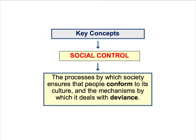It's really important to watch these videos as actively as possible, and that means making lots of notes. The first thing you must jot down is a definition of social control. Social control describes the processes by which society ensures that people conform to its culture and the mechanisms by which it deals with deviance. In other words, social control is about how we're taught to stick to the rules that apply in our particular culture, and it describes the pressures placed either directly or indirectly on people to conform to the norms, values and social practices of their society. Social control is essentially about the maintenance of social order and the various ways in which society deals with deviance.